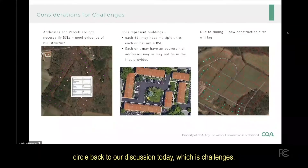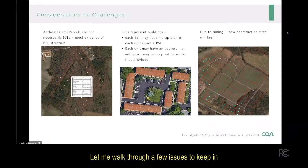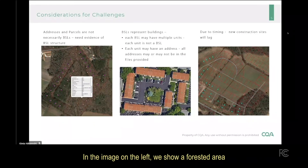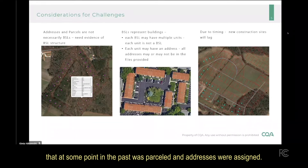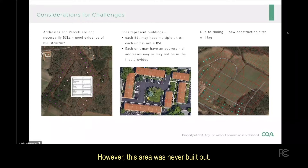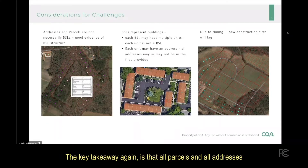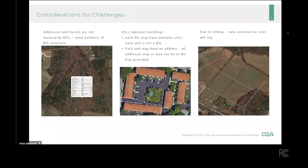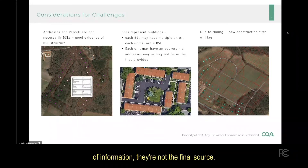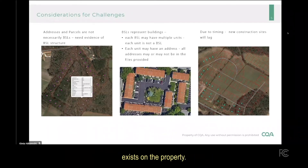Now let's circle back to challenges. Let me walk through a few issues to keep in mind as you consider your challenges. In the image on the left, we show a forested area that at some point was parceled and addresses were assigned, however this area was never built out. As such, BSLs do not exist on these parcels. The key takeaway is that all parcels and all addresses are not necessarily equivalent to a BSL. While each data source is good information, they're not the final source — we need evidence that a BSL structure actually exists on the property.